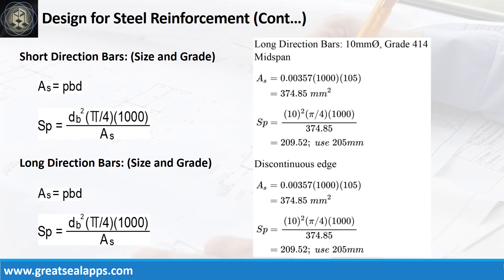At long direction, discontinuous edge: ρ equals 0.00357. b equals 1,000 mm. d equals 105 mm. The area of steel for both sections is 374.85 mm². The spacing for 10 mm bar is 205 mm.